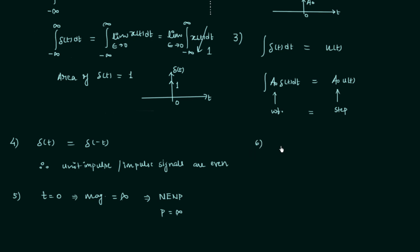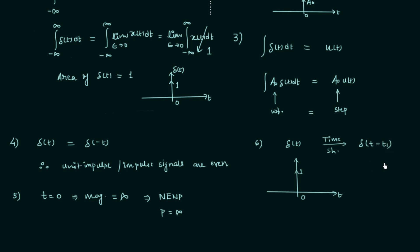Property number 6: we will perform time shifting on the unit impulse signal. The original signal is delta(t), and now we apply a time shift to get the new signal delta(t minus t1). We have performed a right shift by t1. The impulse which was at t equals 0 is now shifted to t1. Don't forget to write the weight of the signal, which is 1 in this case. This is the effect of time shifting on the impulse signal.